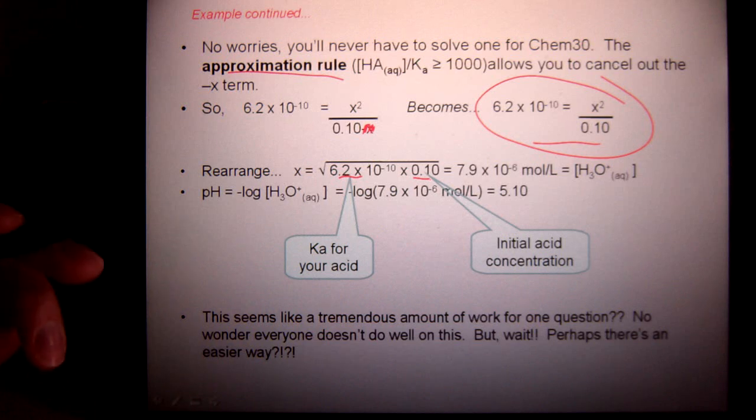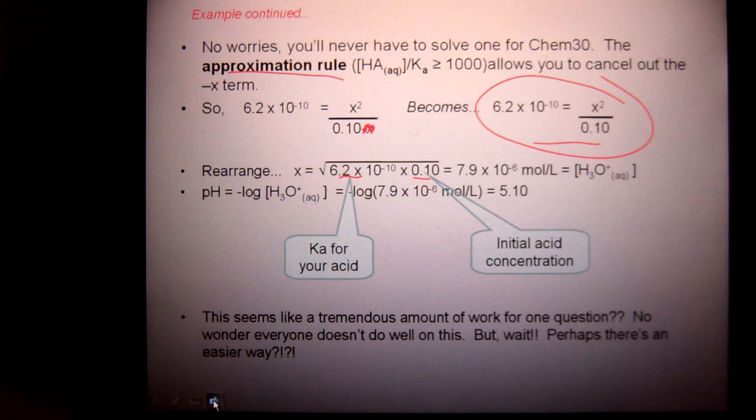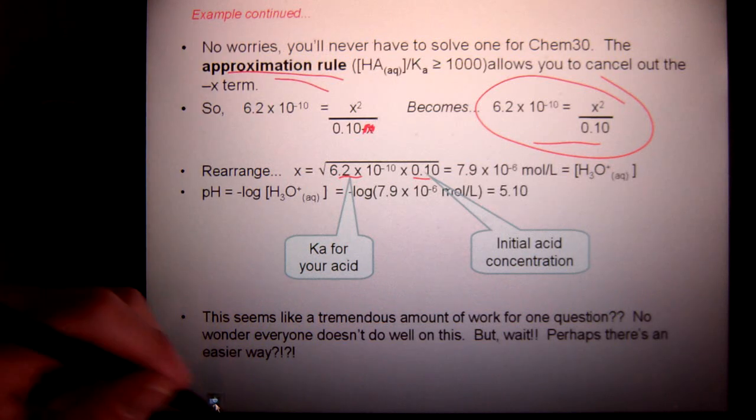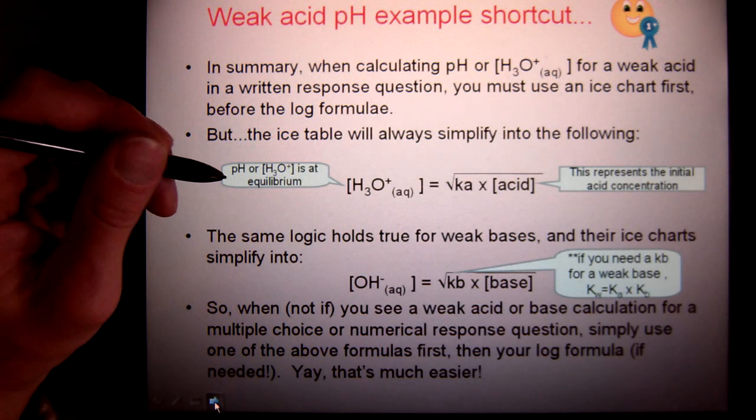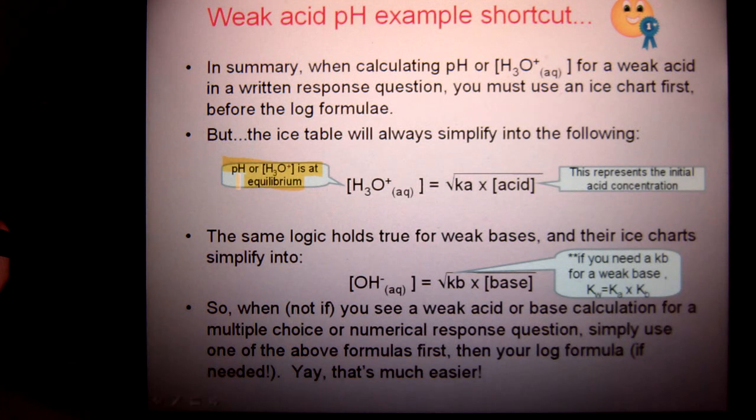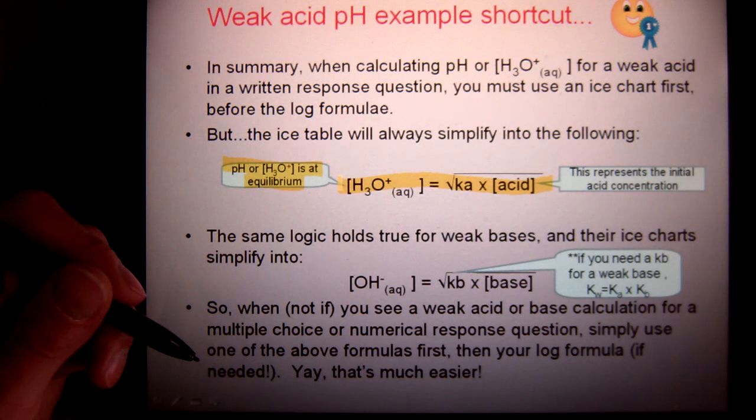So, you do not have to go through this all the time. When you are trying to solve for the pH, or POH, or hydronium or hydroxide, the approximation rule will always hold. Which means you'll never have to solve a quadratic. So, when you're going in the direction of solving for pH, or hydronium, you can go right into this handy little formula. That's what that ice chart always simplifies into.